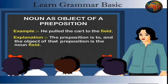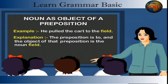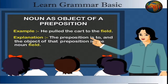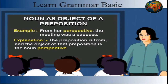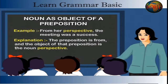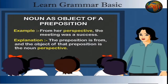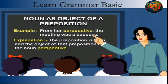Noun as Object of a Preposition. Example: He pulled the cart to the field. Explanation: The preposition is 'to' and the object of that preposition is the noun 'field'. Example: From her perspective, the meeting was a success. Explanation: The preposition is 'from' and the object of that preposition is the noun 'perspective'.